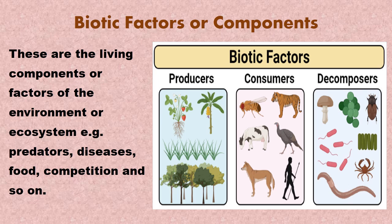The producers provide food — they take carbon dioxide from the atmosphere and water, and use them to make their own food, which then serves as food for others to consume. The consumers include primary, secondary, and tertiary consumers; they don't produce their own food but depend on producers and other consumers. The decomposers are microorganisms that break down dead organic matter, helping to recycle nutrients back into the environment. Other classifications include predators, diseases, food, and competition — all of which play a crucial role in the environment.